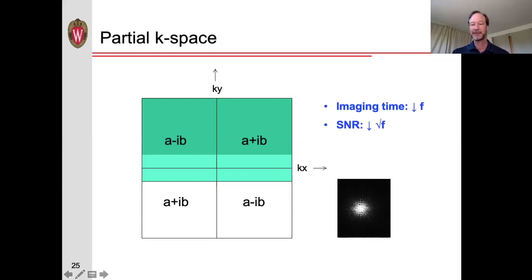The benefit is that we can acquire the image in half the time. If we acquire half k-space, our imaging time is reduced by a factor of two. However, we're acquiring less signal, so our signal-to-noise ratio (SNR) is reduced by the square root of two.